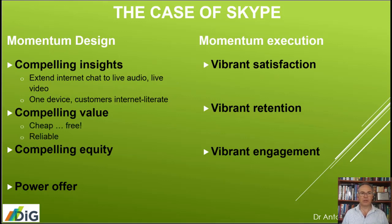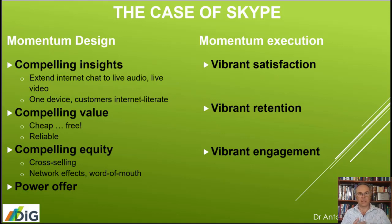What's the compelling value for them? Cheap — certainly very cheap, it was free and reliable. Reliable communication over the internet — fantastic. The equity from the company side: opportunities of cross-selling, network effects, word of mouth. People start talking about how good this service is and you get network effects where the communication service becomes more valuable as more people are on the network. So there's also an incentive for consumers to go out and promote the product and the service.